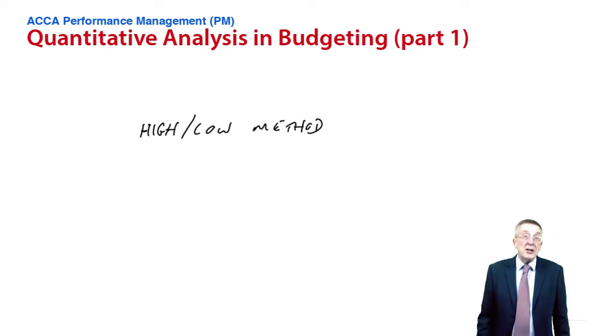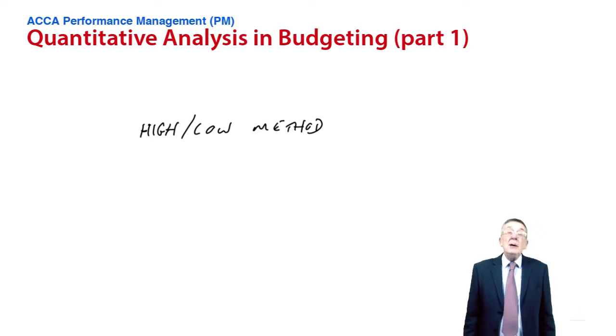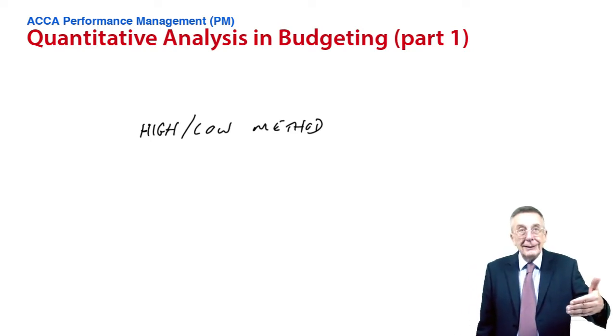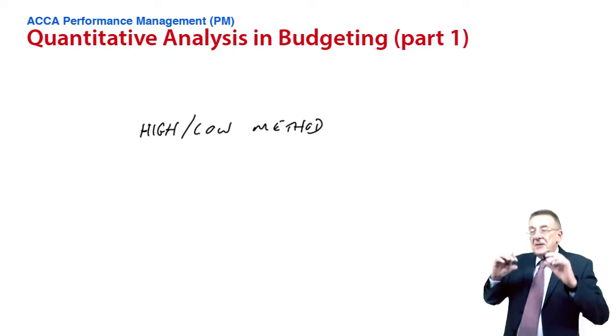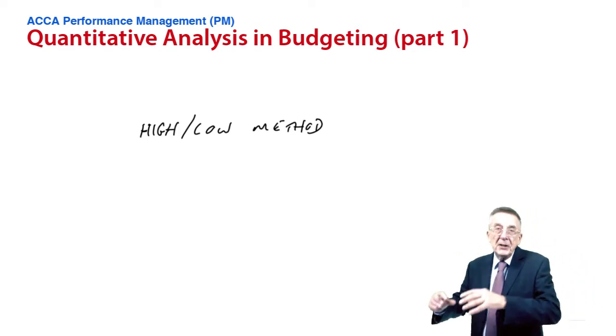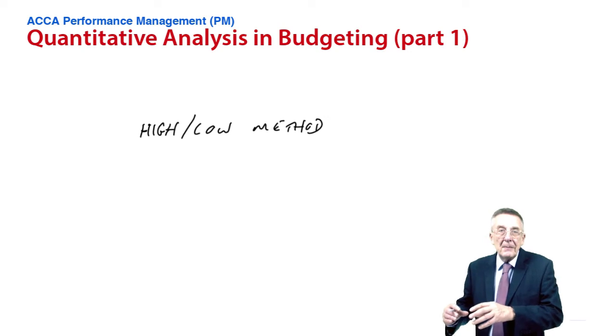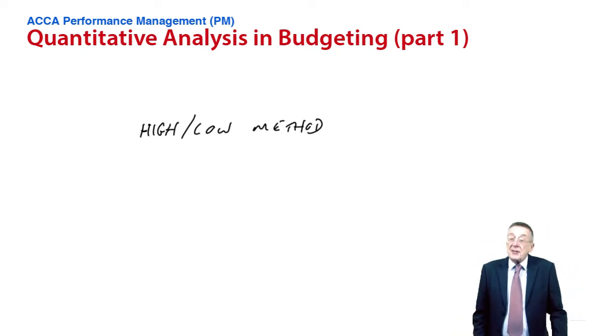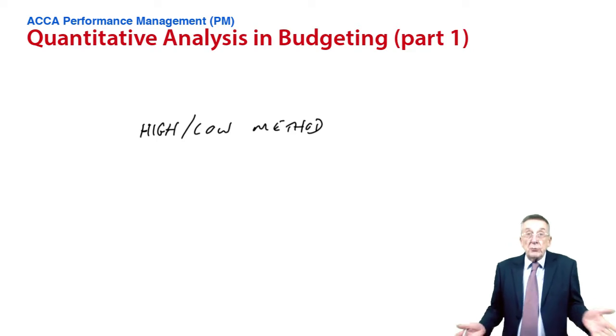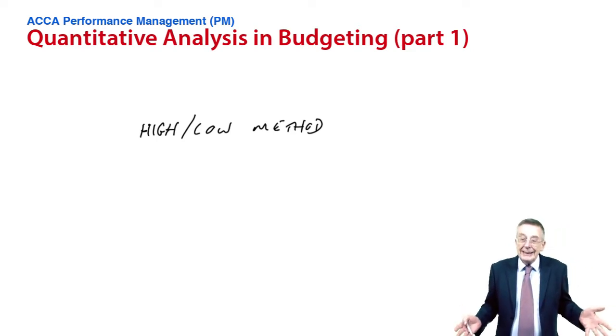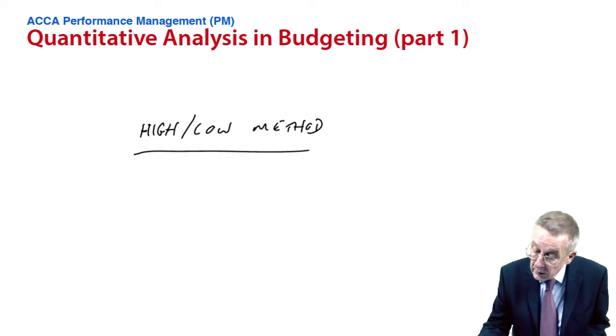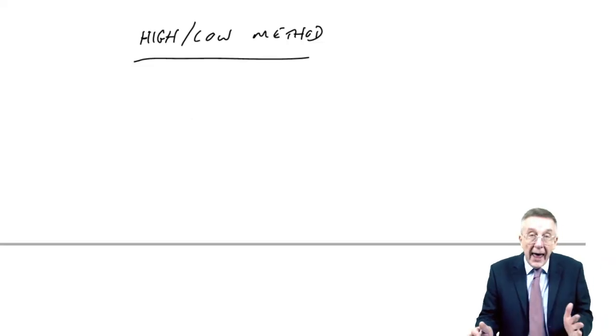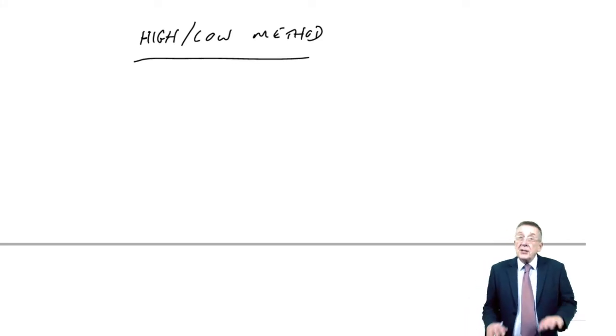We've got the two together, just one bill but part of it's fixed, part of it's variable. If we were doing flexed budgets in particular, we'd need to know what's the variable, because in the flexed budget we want to put in the standard cost of the actual units produced. We need to know what the fixed amount is because in the flexed budget the fixed should stay fixed regardless of what we produce. So high-low method is a very simple, very approximate way of attempting to split out how much is the fixed and how much is the variable.